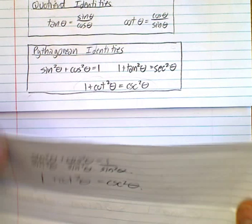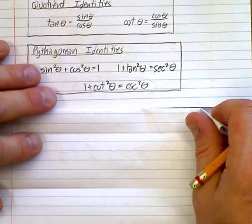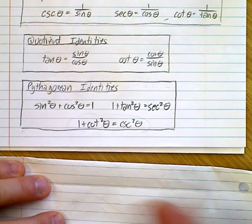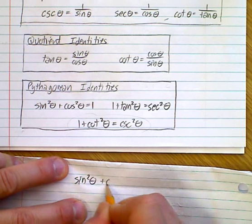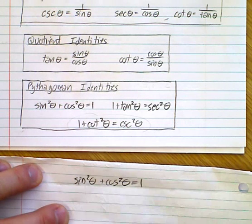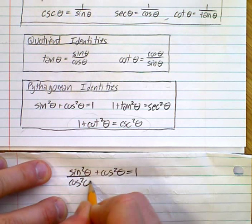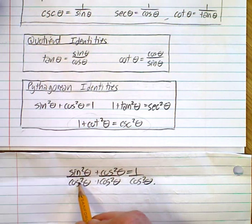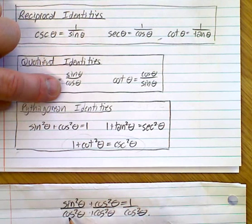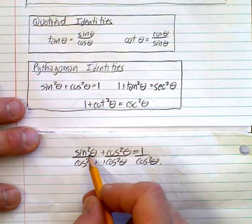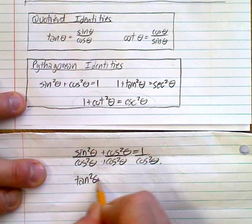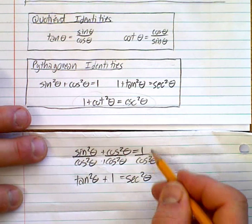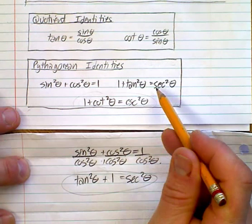Now let's divide everything by cosine squared theta. Starting with sine squared plus cosine squared equals 1: sine squared over cosine squared is tangent squared theta, cosine squared over cosine squared is 1, and 1 over cosine squared is secant squared theta. So we get: tangent squared theta plus 1 equals secant squared theta — that's our third Pythagorean identity.